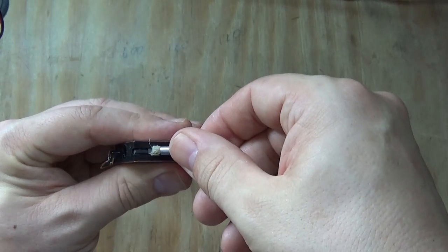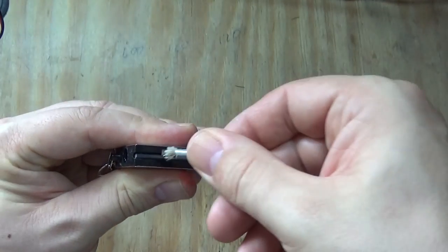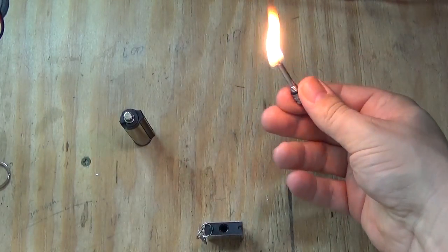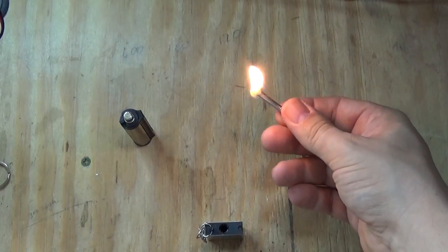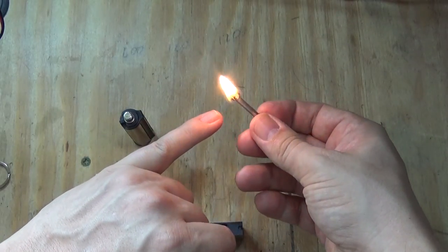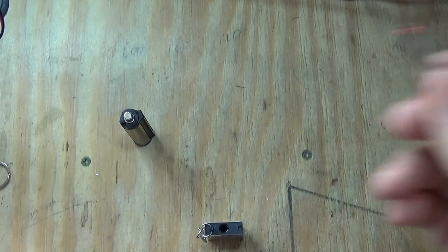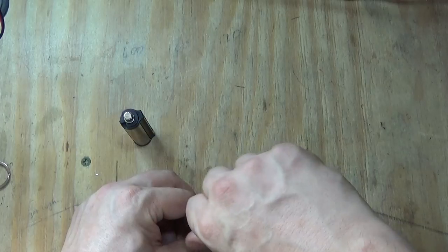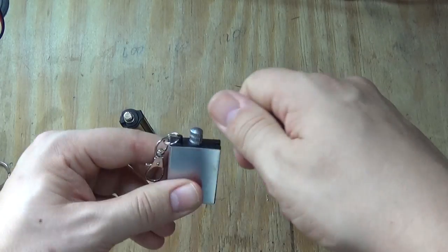This piece of ferro rod hasn't been used yet so I'll have to scrape the top layer off. There we go, and that one lit. That actually lit a little bit easier than the other one. As long as there's lighter fluid there it shouldn't burn the wick too much.